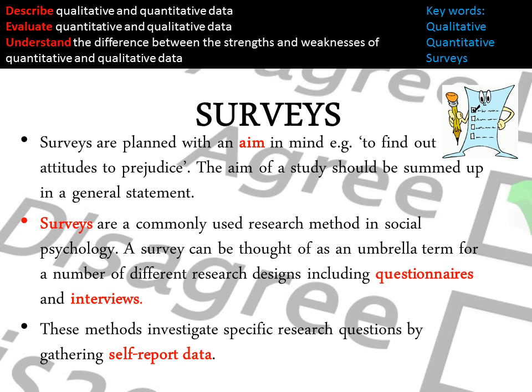Now firstly, surveys is the overarching name for questionnaires and interviews, and surveys are always planned with an aim in mind — so what is it trying to do? It might be to find out attitudes about prejudice, and this should always be summed up in a general statement.